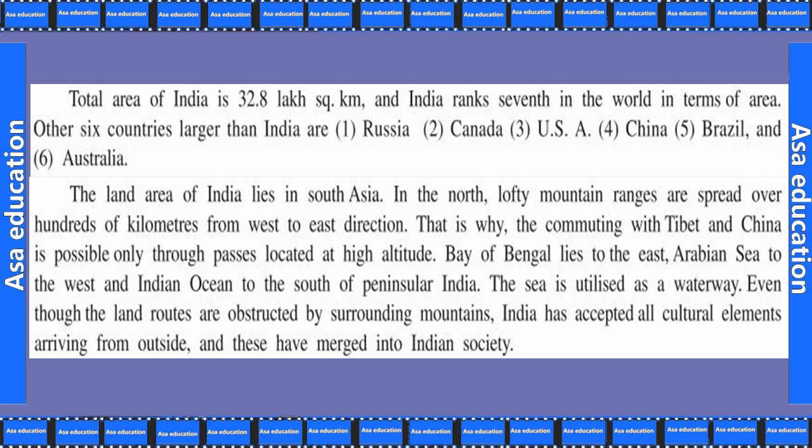The land area of India lies in South Asia. In the north, lofty mountain ranges are spread over hundreds of kilometers from west to east. Commuting with Tibet and China is possible only through passes located at high altitude. Bay of Bengal lies to the east, Arabian Sea to the west, and Indian Ocean to the south of Peninsular India.